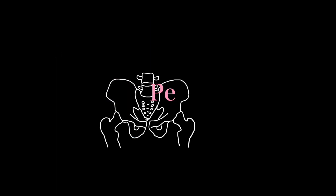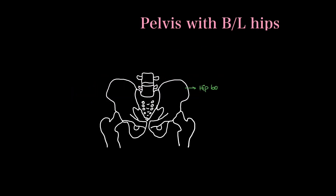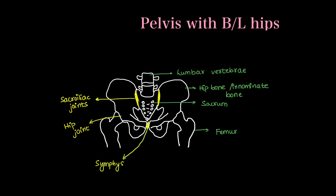Pelvis is made of a set of bones which we are going to draw and label now. This is the pelvis with bilateral hips. It is made of two hip bones — right and left — also known as innominate bones. There are two lower limb bones, the femur. In the center posteriorly we have the sacrum, above which we have the lumbar vertebrae. Hip bones and sacrum are joined by sacroiliac joints, femur and hip bones are joined by the hip joint, and the two pelvic bones are joined anteriorly by the symphysis pubis, which is a cartilage.